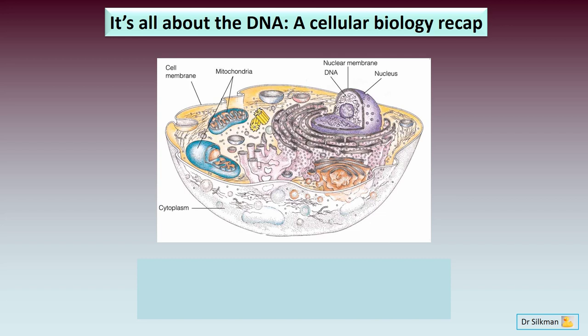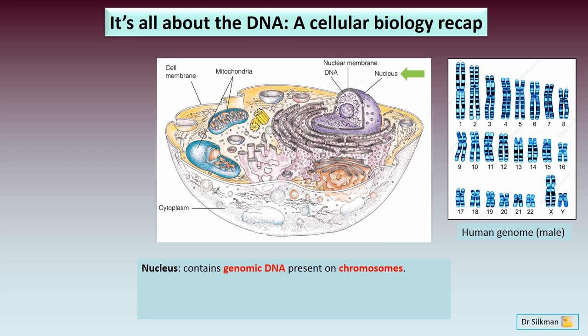In order to understand the forensic science, we need to quickly go over some basic cellular biology. Shown here is a typical human cell, which contains a structure known as a nucleus. The nucleus contains genomic DNA, present on structures called chromosomes. This slide shows a male human genotype, which contains an X and a Y chromosome. A female genome would have two X chromosomes.